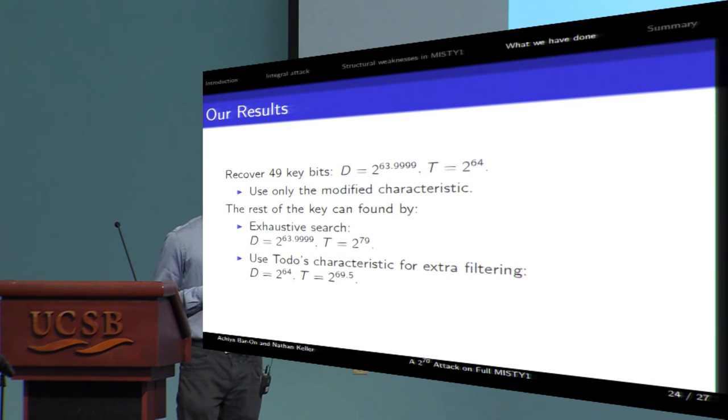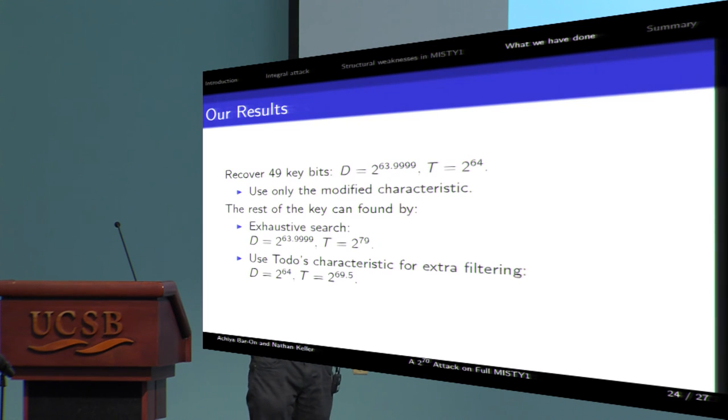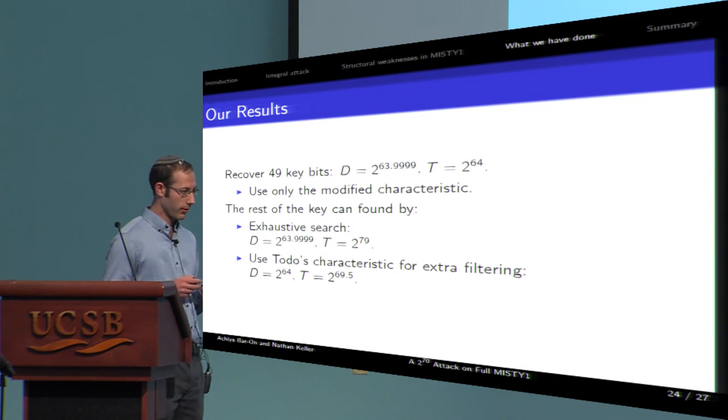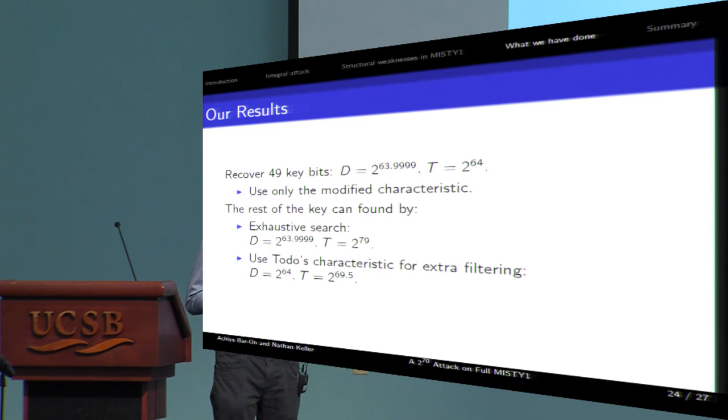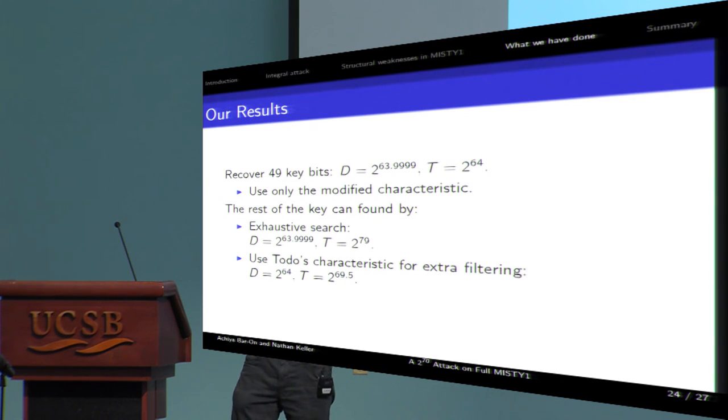Adding up all techniques together, we achieve the following results. To recover 114.9 key bits, we need three things. One is a modified characteristic. Second, we need almost all the code book. And three, a time of two to the 64. That is roughly the time to decrypt the data. The rest of the key can be recovered in two ways. One is just exhaustive search that increases the time to two to the 79. Less trivial way is to use also Todo's original characteristic for extra filtering. This way, the time decreases under two to the 77. But all the code book is required.